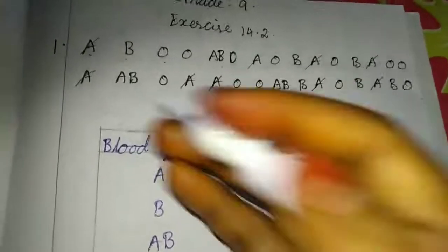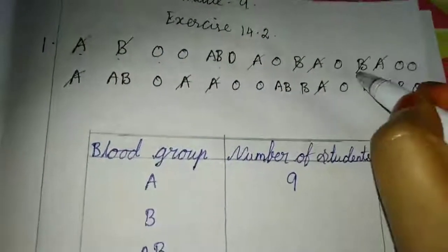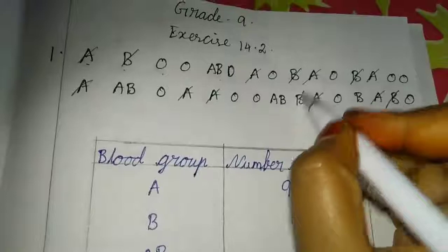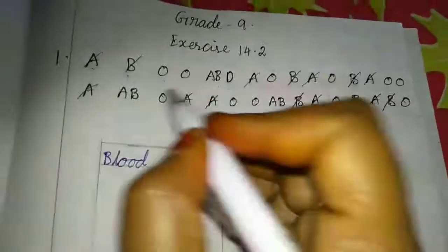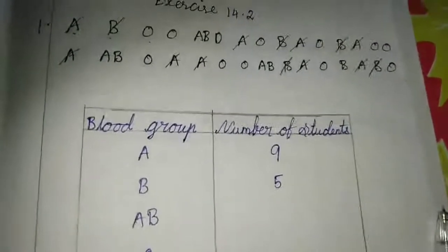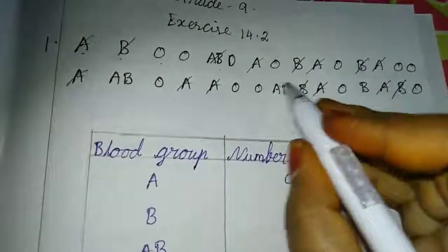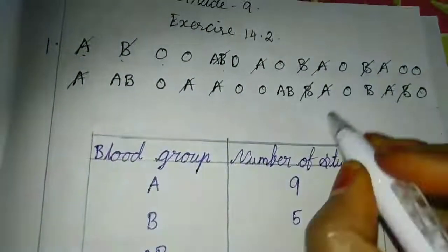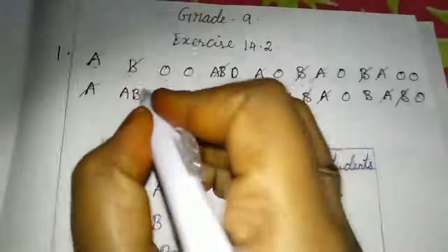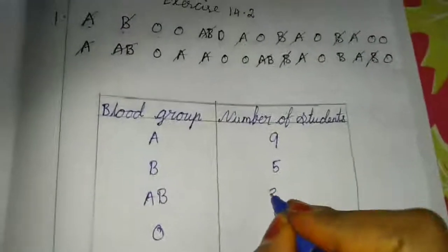Next, blood group B: 1, 2, 3, 4, 5. So B is 5. Next we will move to AB: 1, 2, 3, 4, 5, 6, 7, 8, 9, 10, 11, 12 — so AB is 3.